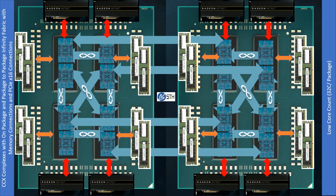Traversing the Infinity Fabric is not just cache data and RAM data — you also have PCIe devices such as GPUs. What AMD's design also means is that going from GPU to GPU on a two-socket system with x16 links to each GPU, you're going to have to go over the Infinity Fabric with GPU data. Following the lines, it also means that in some cases memory can be located very far away from each GPU, and GPU-to-GPU communication even on the same package is going to require an Infinity Fabric hop.